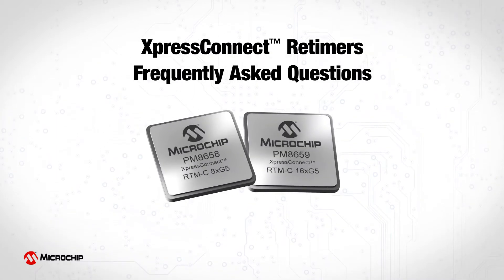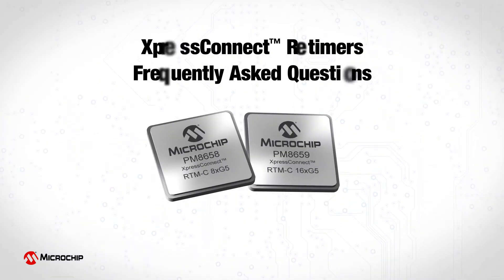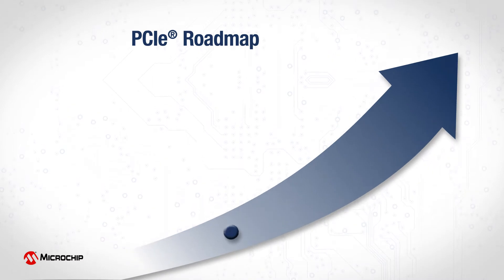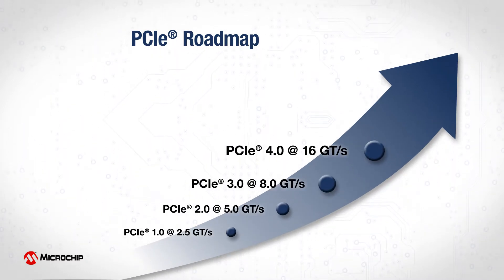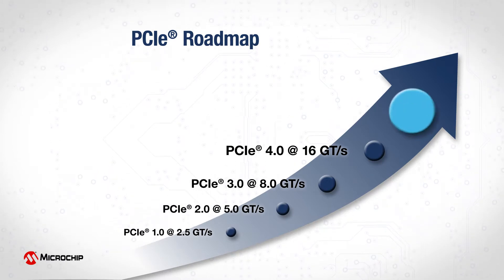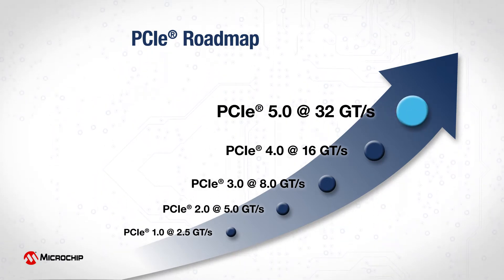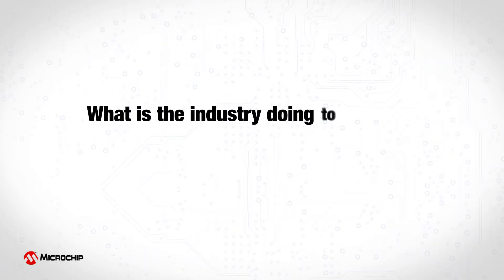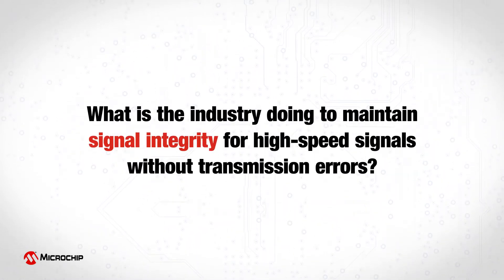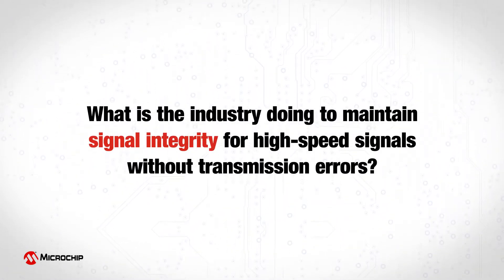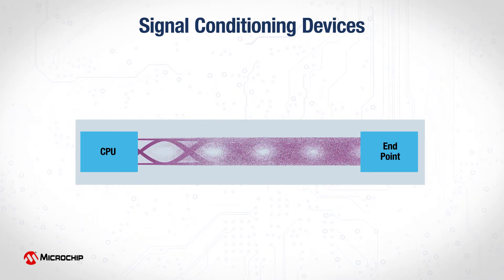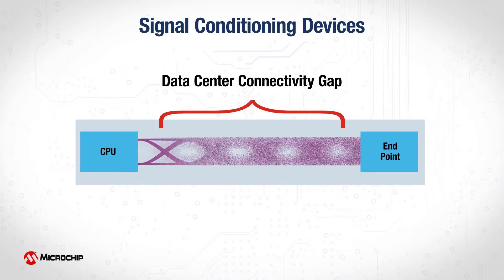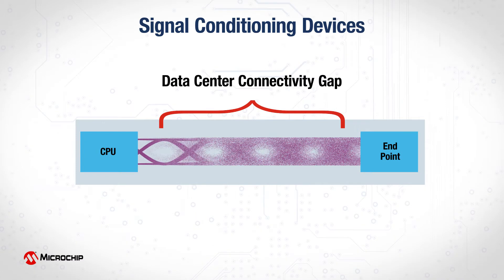Frequently asked questions about Microchip's Express Connect retimers. PCIe data rates have quadrupled over the last several years to remove data transmission and processing bottlenecks, and new CPUs now have more PCIe lanes available. Signal conditioning devices, such as re-drivers and re-timers, have been created to help close the transmission gap between the CPU and receiving endpoints.